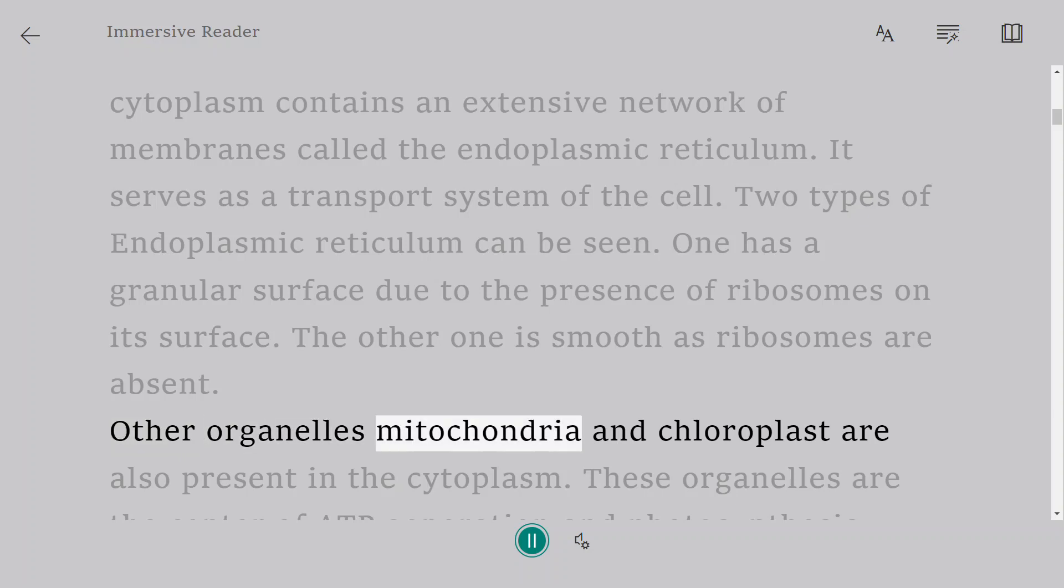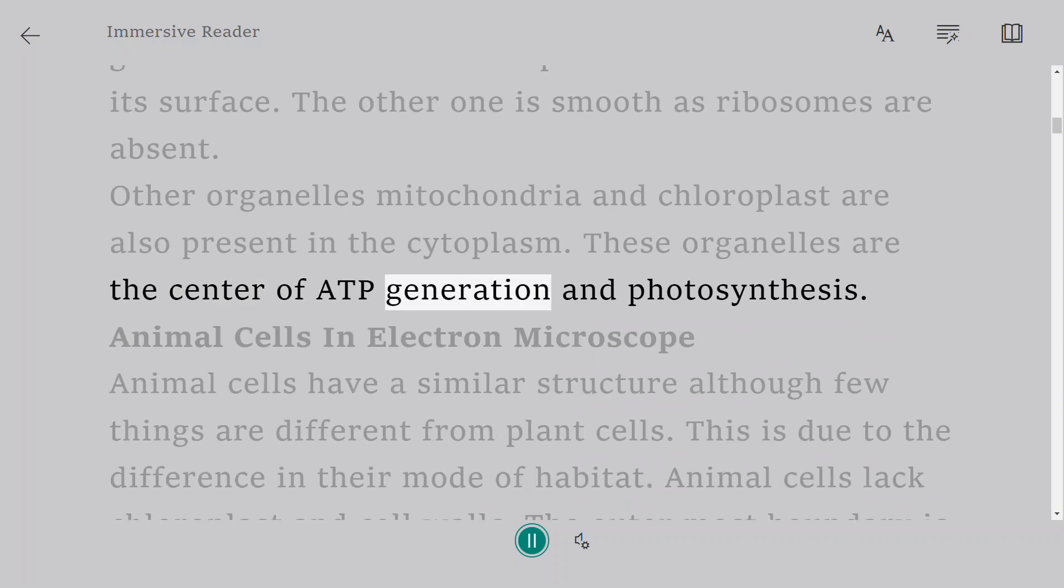Other organelles mitochondria and chloroplast are also present in the cytoplasm. These organelles are the center of ATP generation and photosynthesis.